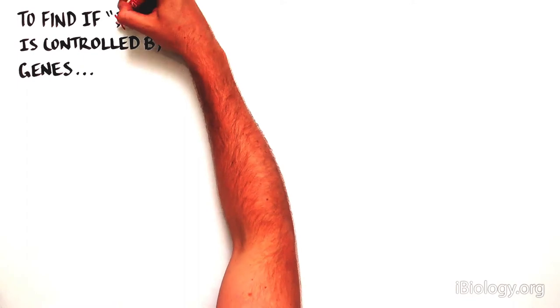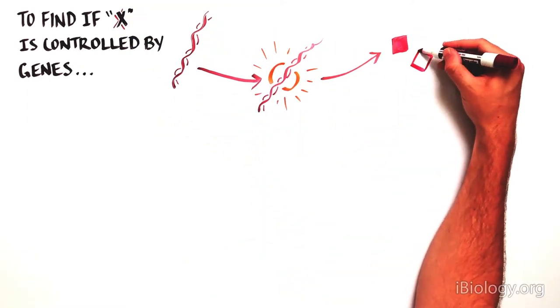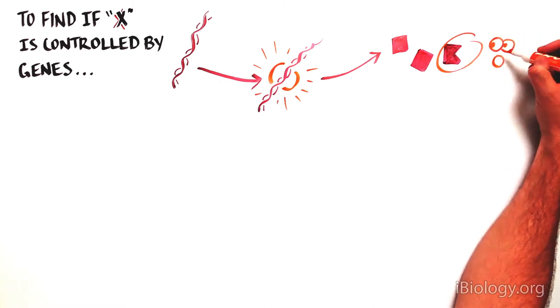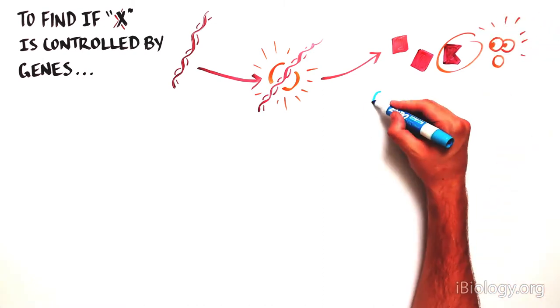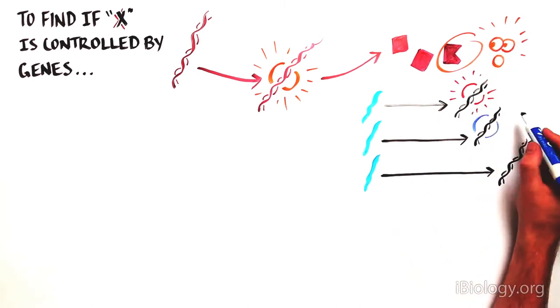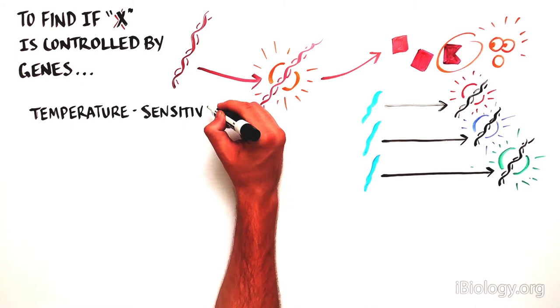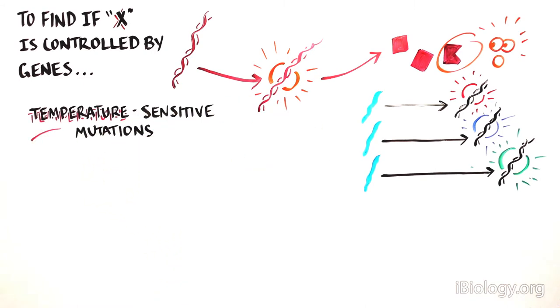In order to determine if something is controlled by genes, scientists introduce mutations or modifications to genes and examine the response. In this case, scientists randomly made mutations to genes in the C. elegans worm. Specifically, they used a clever technique called temperature-sensitive mutations.